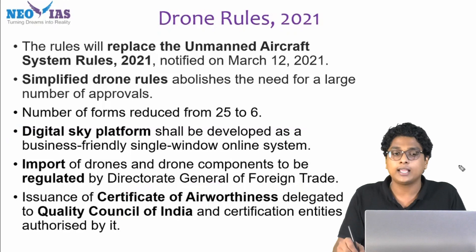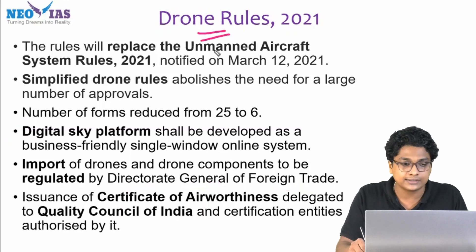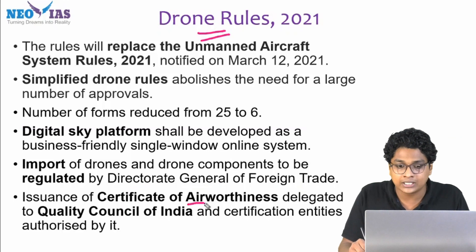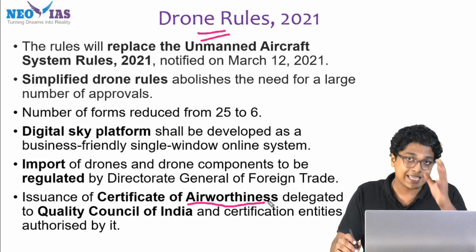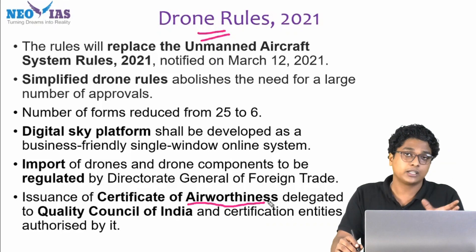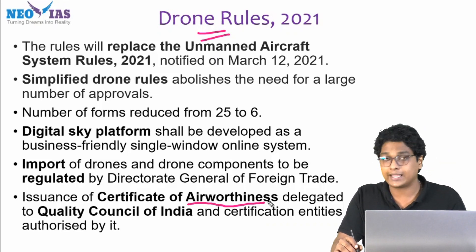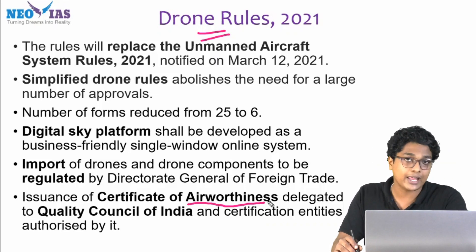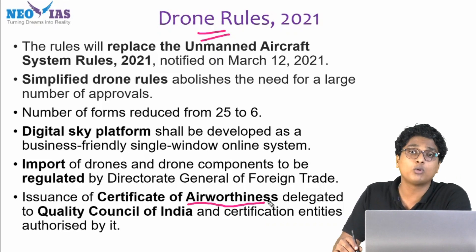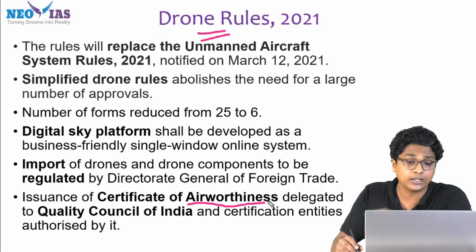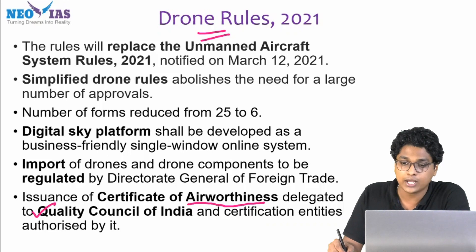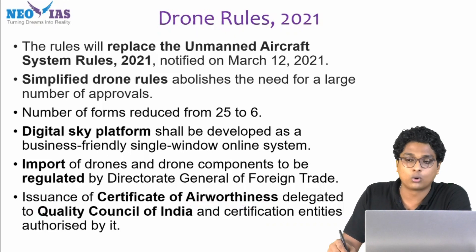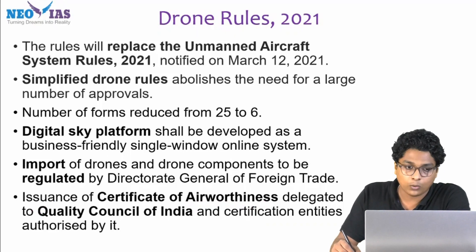Another key thing regarding the drone rule is the issuance of the certificate of airworthiness of a drone — how airworthy a drone is. That certificate was usually given out by the Directorate General of Civil Aviation. Now, it has been moved on or delegated to the Quality Council of India. This is another change according to the new drone rules.